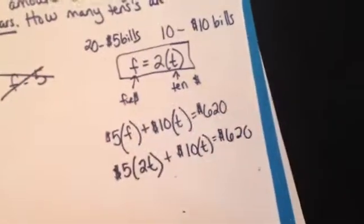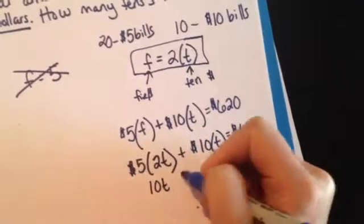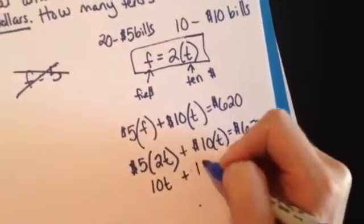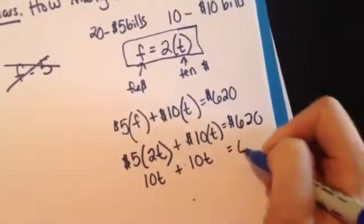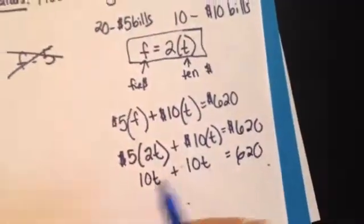Now, I'm just going to solve it as an equation. 5 times 2T is 10T, plus 10 times T is 10T, equals $620. And then, I'm going to combine like terms.